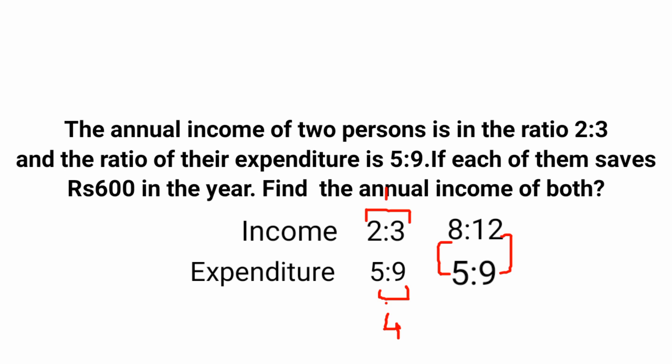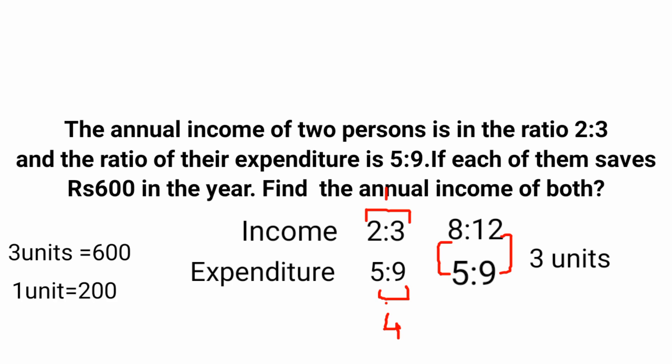Now we can see that the difference between income and expenditure for the first person is 8 minus 5, that is 3 units, and for the second person it is 12 minus 9, that is 3 units. This difference represents the amount each person saved in a year. So 3 units equals 600, meaning 1 unit equals 600 divided by 3, which is 200. We got the new income ratio as 8:12.